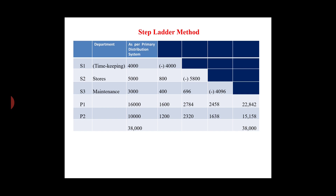So in summary, the service department costs are allocated one service department at a time. Each service department's expense is redistributed to the remaining production departments and lower-ranked service departments, step by step in order, following the step ladder method of overhead apportionment.